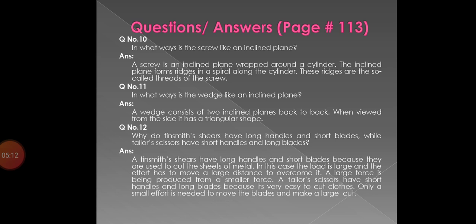Question number 10. In what ways is the screw like an inclined plane? Answer: a screw is an inclined plane wrapped around a cylinder. The inclined plane forms ridges in a spiral along the cylinder. These ridges are the so-called threads of the screw.